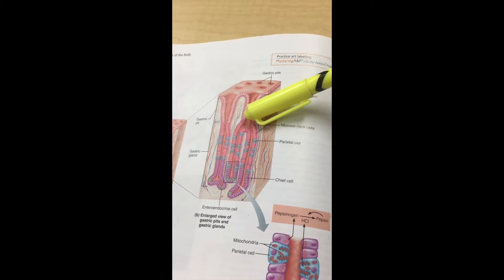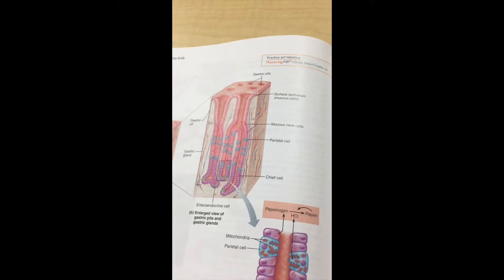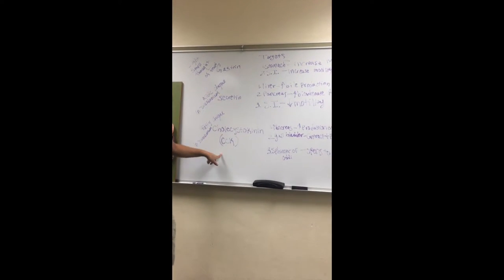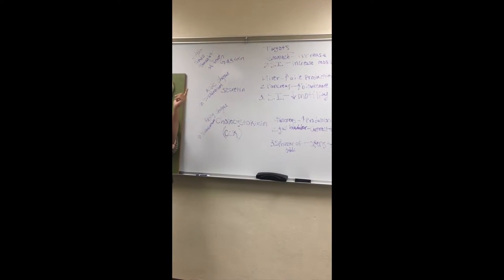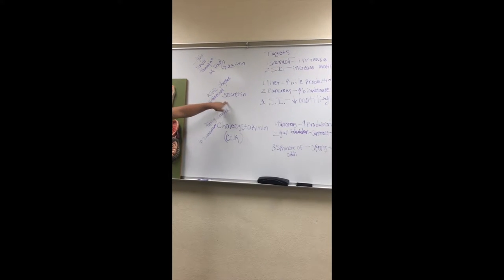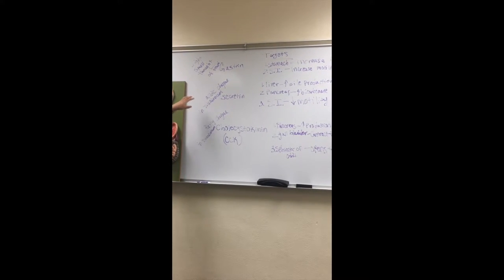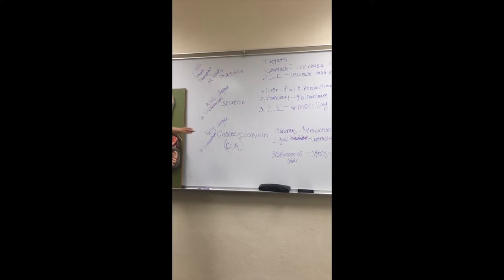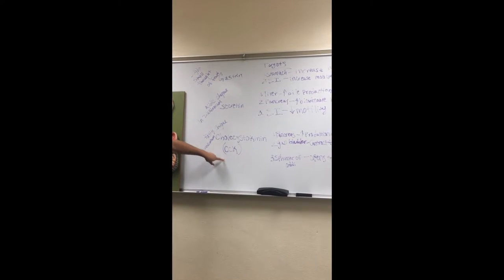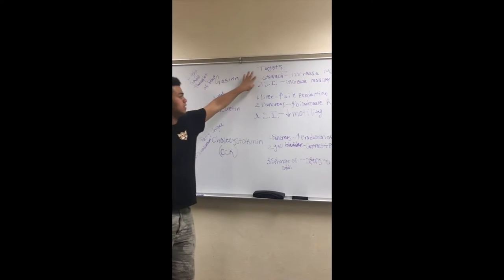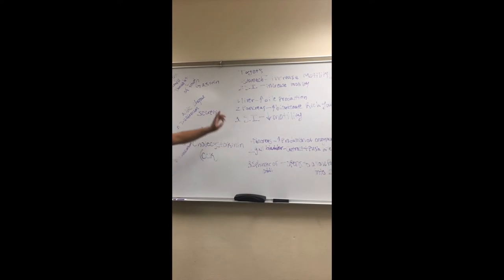When it comes to the stomach, three major chemicals are gastrin, secretin, and CCK. Gastrin is released in response to the sight, smell, and thought of food within the stomach. Secretin is released in response to acidic chyme in the duodenum, which is the first portion of the small intestine. And CCK is released in response to fatty chyme in the duodenum. Each has their targets and their actions.